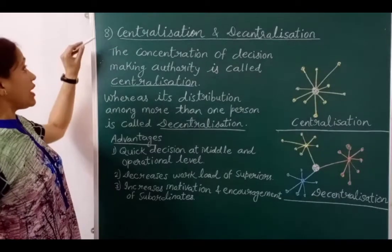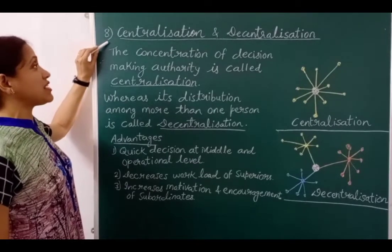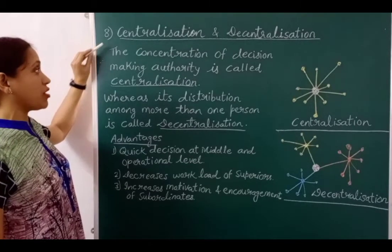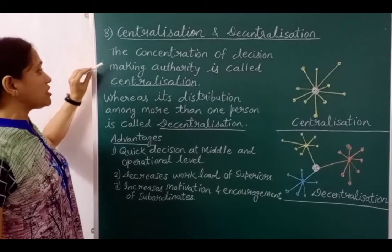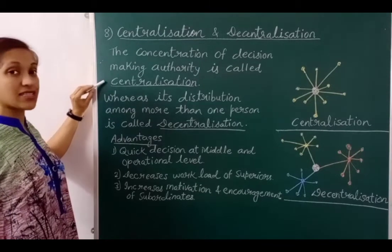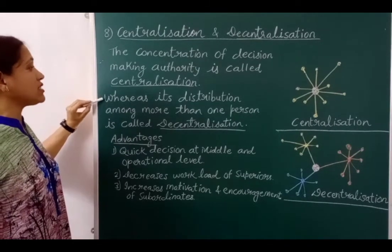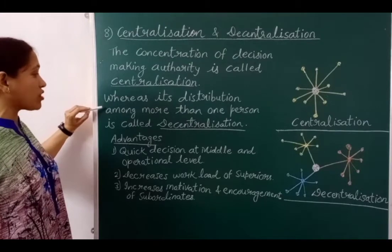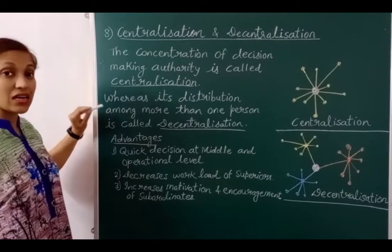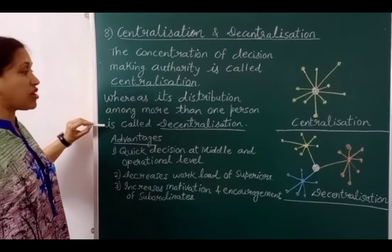Good morning friends. In the last video you learnt the first 7 principles of Henry Fayol. Now in today's session I will explain the remaining 7 principles. The 8th principle is Centralization and Decentralization. The concentration of decision-making authority is called centralization, whereas its distribution among more than one level is called decentralization.